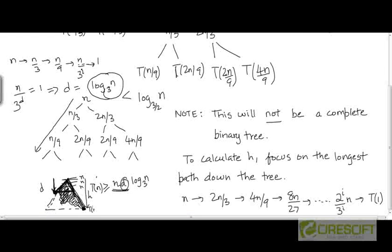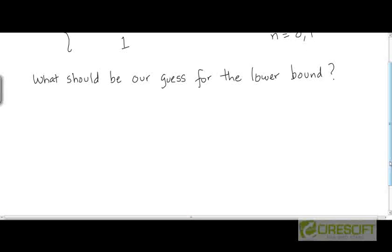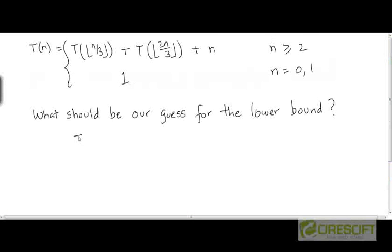This means that we can make a guess that T of n is big omega of n log n. And we can try to prove this more rigorously, again using the substitution method or mathematical induction.